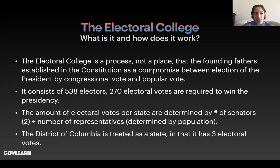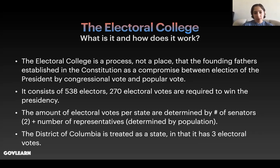Finally, we get to the Electoral College. What is it and how does it work? The Electoral College is a process, not a place, that the Founding Fathers established in the Constitution as a compromise between the election of the president by congressional vote and the popular vote. The Electoral College consists of 538 electors, and 270 electoral votes are required to win the presidency. The amount of electoral votes per state are determined by the number of senators, which is always two per state, plus the number of representatives, which is determined by population. For instance, California has 53 members of the House of Representatives and two senators, giving it 55 electoral votes. New York has 29, Florida has 29 — these are states with large populations. However, a state like North Dakota would have only three electoral votes due to its smaller population. The District of Columbia, or Washington D.C., is treated as a state with three electoral votes, even though it does not have Senate representation.